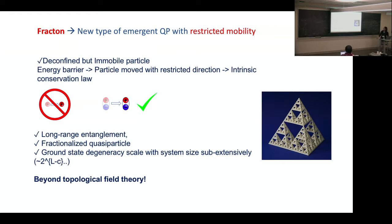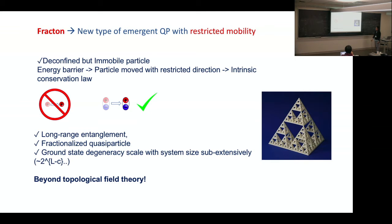Fractons throughout my talk correspond to a new type of quasiparticles which have restricted mobilities. These are still quasiparticles, which means they must be deconfined — once you create a quasiparticle and its antiparticle in space, this shouldn't cause a divergent energy. However, it is impossible to move a single quasiparticle without touching the other without going through an energy barrier. Some quasiparticles can only move within a restricted manifold like a 2D or 3D fractal, a 2D plane, or even a 1D line.